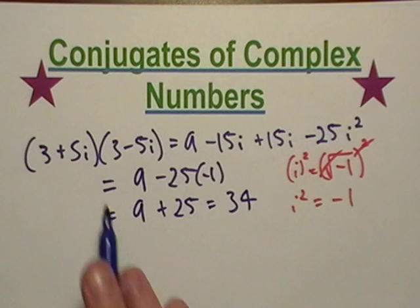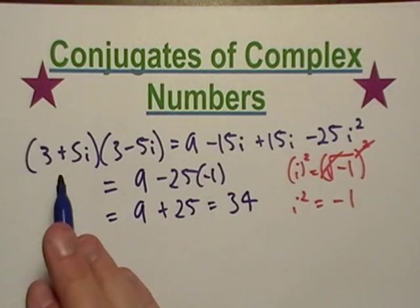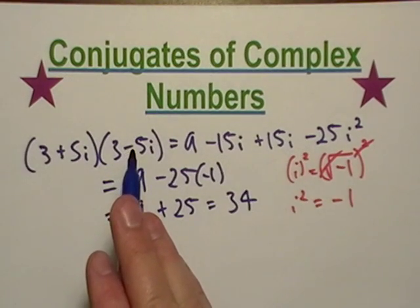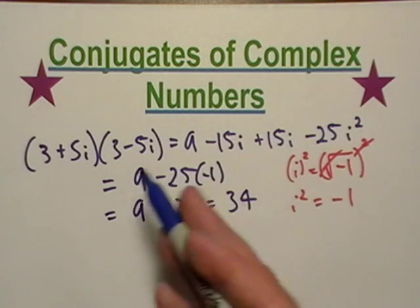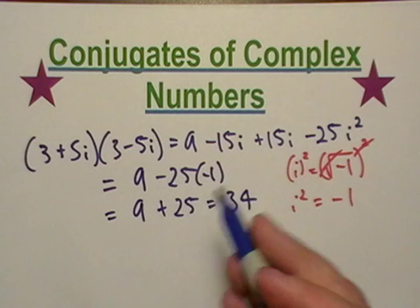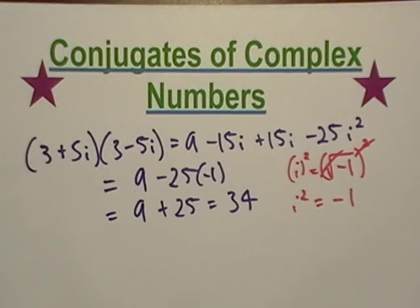So I took a complex number, I found - just by switching the sign in the middle, and that's usually all you have to do - I basically found another complex number that I could multiply it to and turn it into a real number.